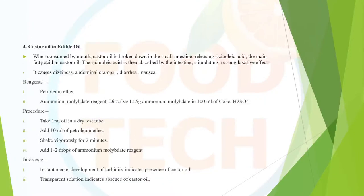Castor oil is added to vegetable oil and affects the fatty acids present in it. If there is turbidity in the vegetable oil sample, it indicates the presence of castor oil. If a transparent solution is obtained from the sample, castor oil is not present in the oil.